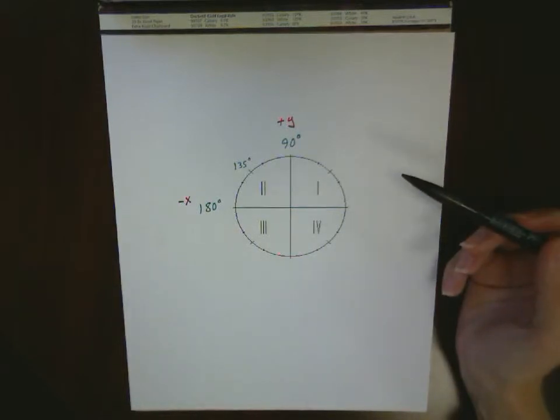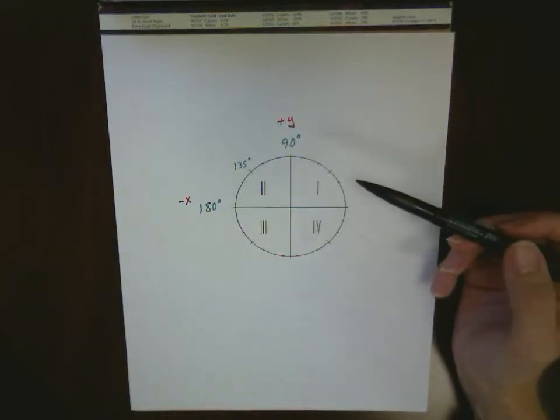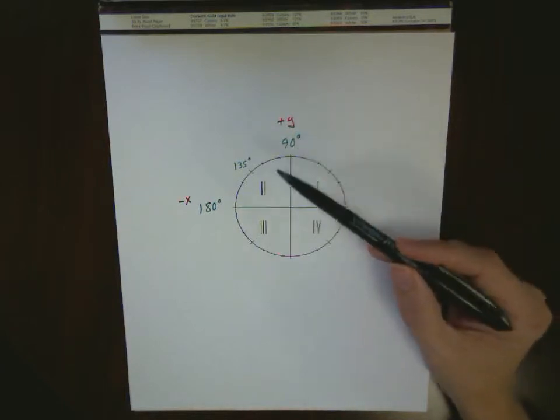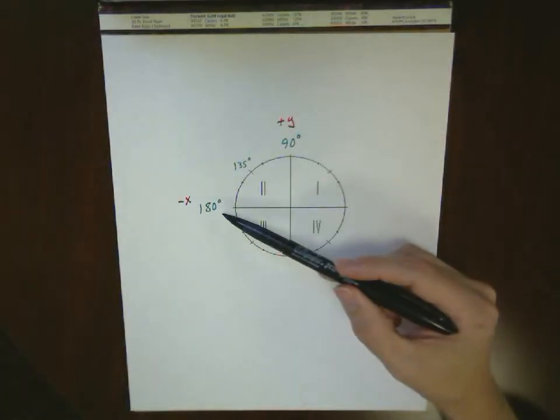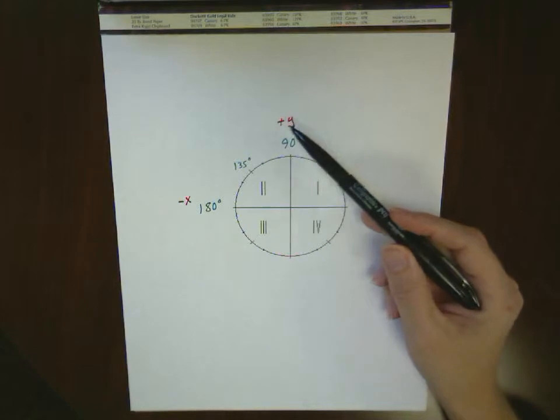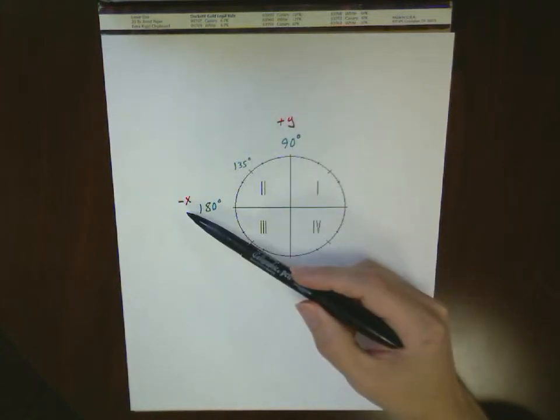Here's an example of second quadrant polar coordinates. Remember, second quadrant is between 90 degrees and 180 degrees, which means we have positive values for y, but negative values for x.